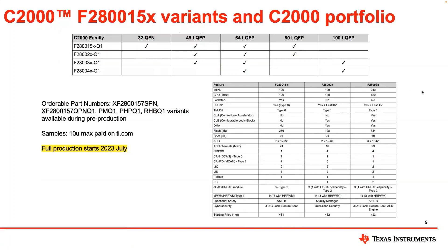Here we're showcasing the scalability and compatibility of the C2000 entry and mid-performance portfolio. You can find the specific packages that overlap as well as the spec comparison of the F28015X, 2X, and 3X. From a timeline perspective, we are already providing engineering samples on ti.com today for purchase, and we are looking forward to production in July of this year for the F28015X.